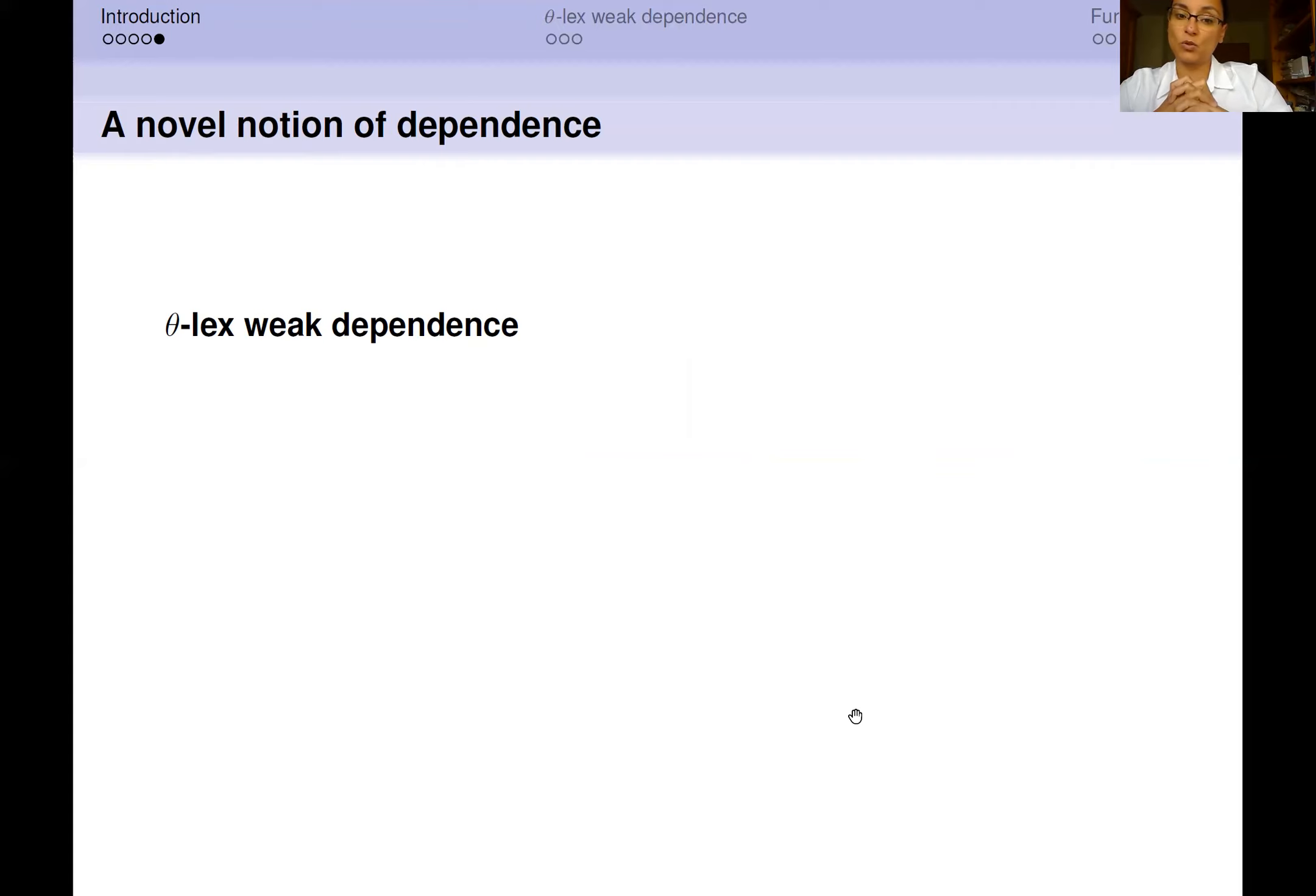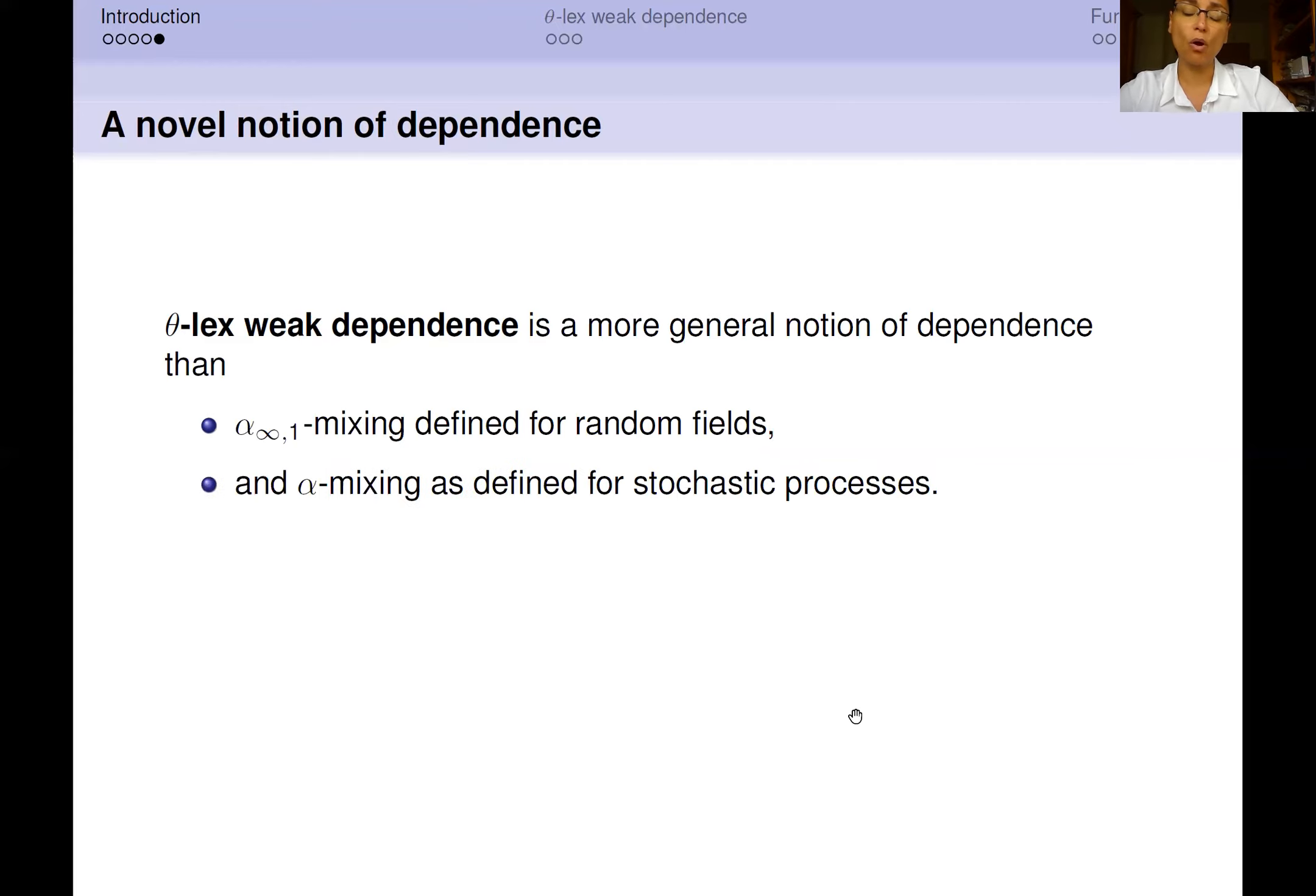This notion of dependence has several characteristics. The most important one is that it's a more general notion of dependence than α(∞,1)-mixing, as we can define it for random fields, and is also more general than α-mixing as defined for stochastic processes. This means that this notion of dependence applies to a broader classes of models.